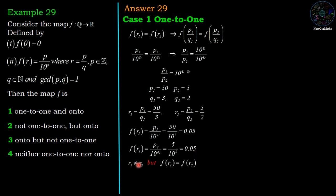Therefore r1 ≠ r2, meaning 50/3 ≠ 5/2, but F(r1) = F(r2) since 0.05 = 0.05. Therefore F is not one-to-one. The first option is cancelled.